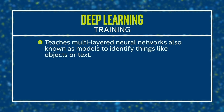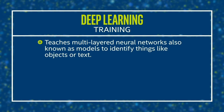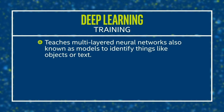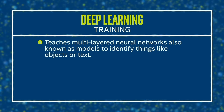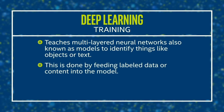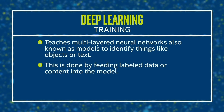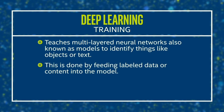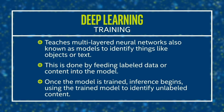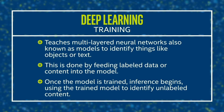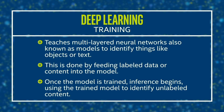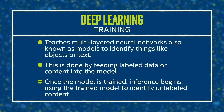DL comprises two major pieces: training and inference. Training teaches multi-layered neural networks, also known as models, which make it possible to identify things like objects or text. This is done by feeding labeled data or content into the model. Once the model is trained, inference begins — using the trained model to identify unlabeled content.